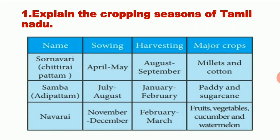First question: explain the cropping seasons of Tamil Nadu. Tamil Nadu has 3 cropping seasons. The first is Sornavari season, also known as Chittiripattam. Its sowing period is April to May and harvesting period is August to September. The major crops of Sornavari are millets and cotton.